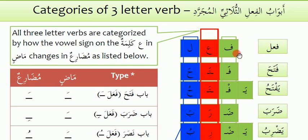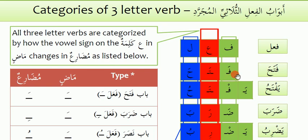This is the Fa and Lam — this is the three letter Kalma: Fail. Now this is Fa, Ta, Ha — Fath, Ha. It means 'he opened.' So Fa, Ta, Ha — all three letters have the Fath vowel sign.